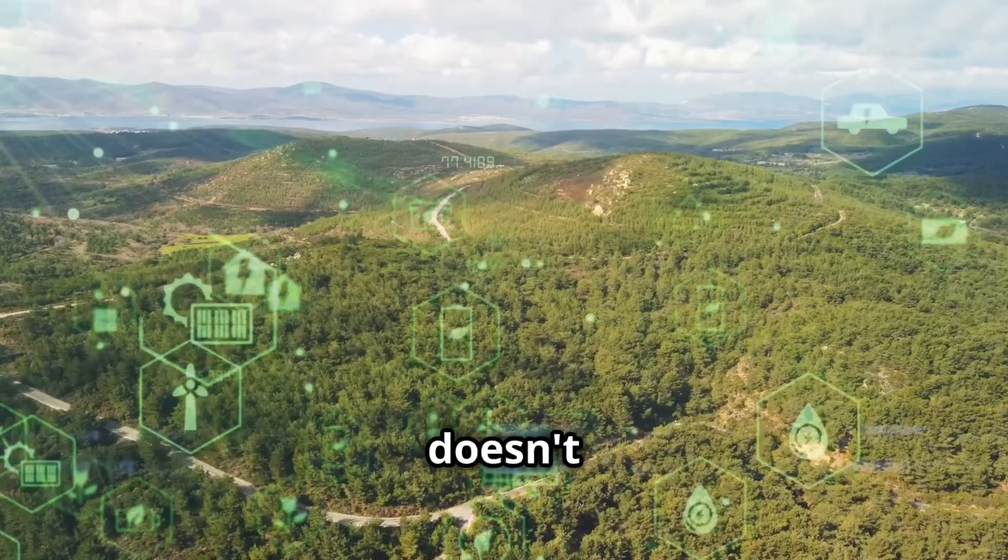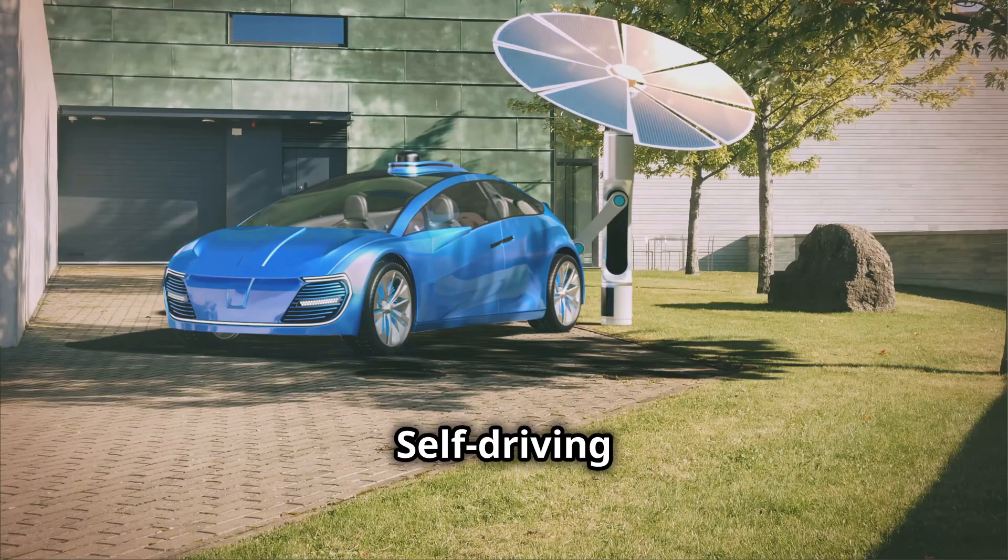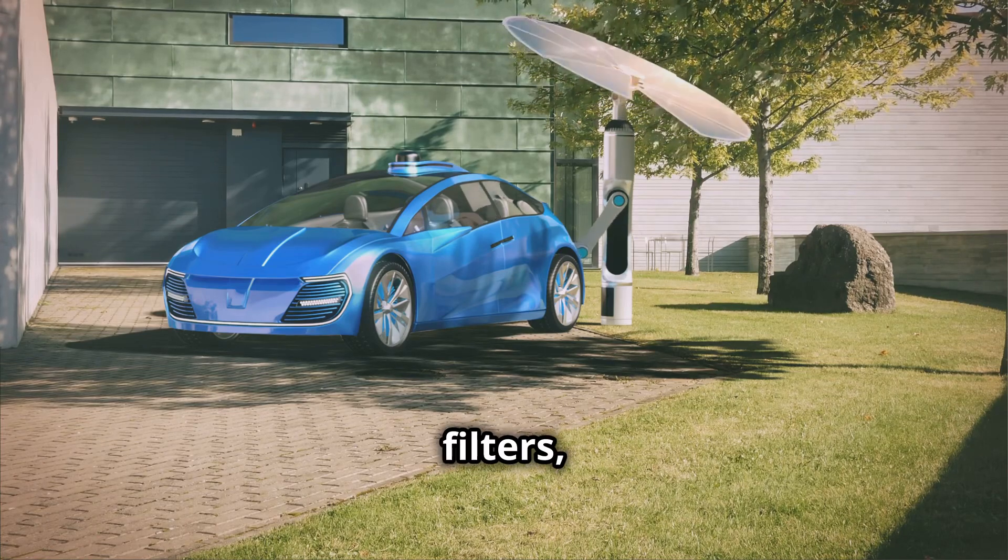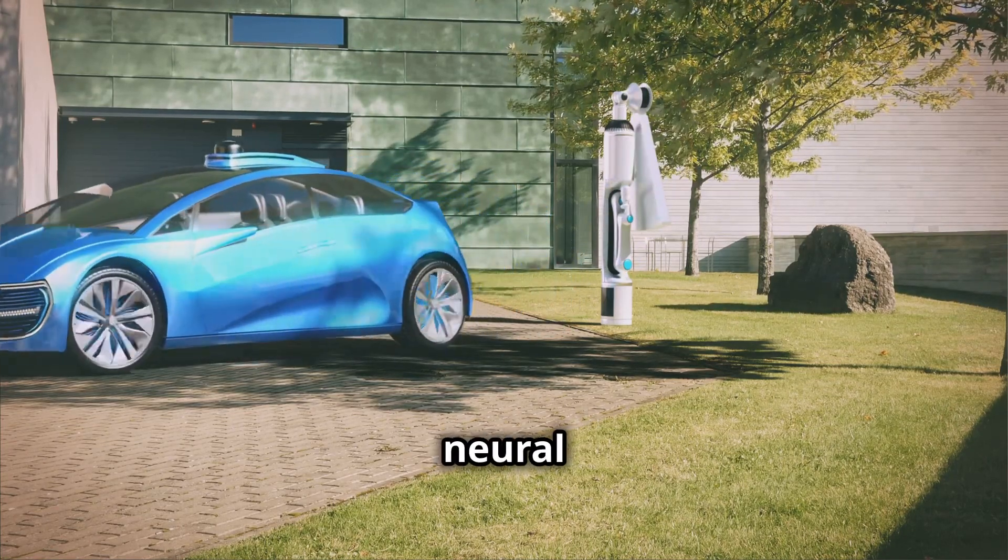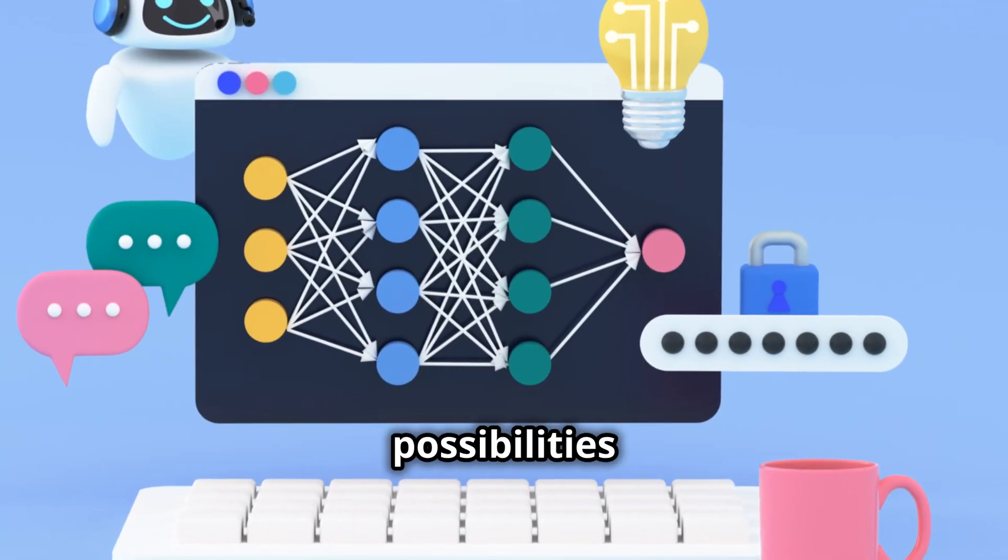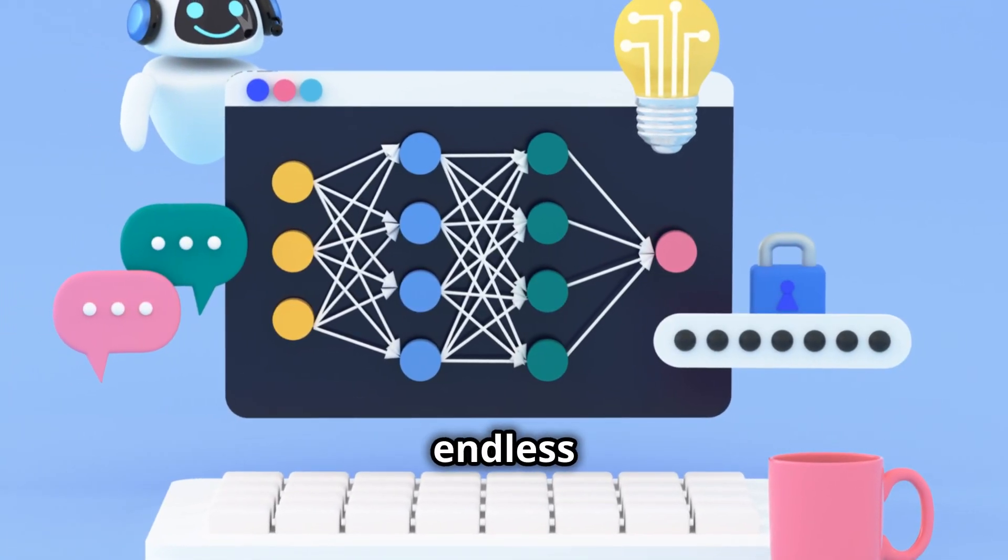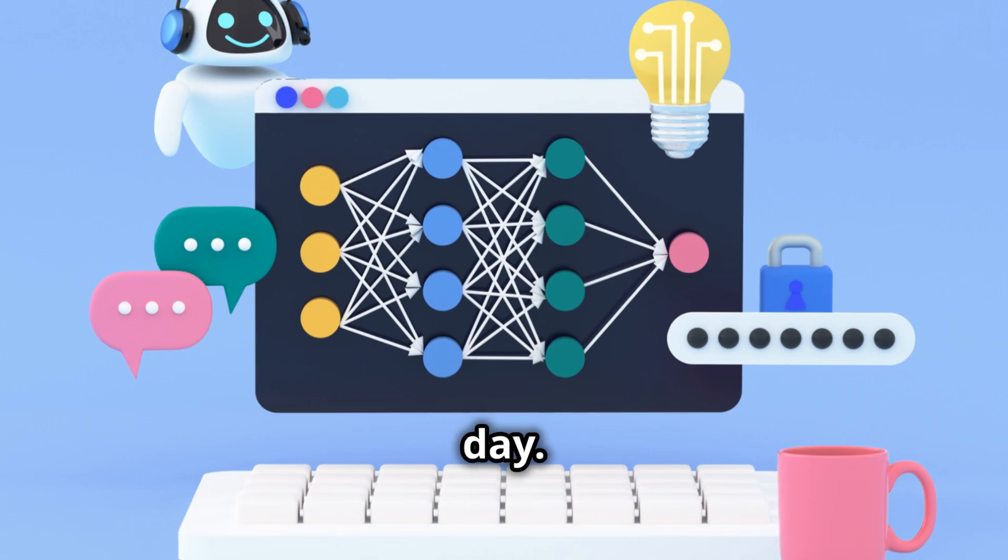But it doesn't stop there. Self-driving cars, spam filters, even your Instagram feed, they're all powered by these neural networks. The possibilities are endless and growing every day.